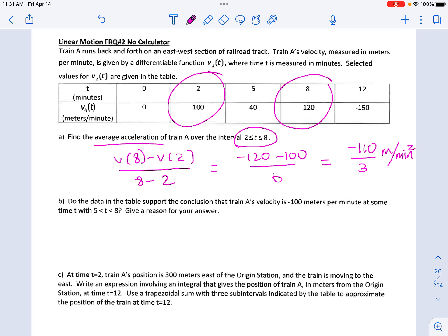Part B. Does the table support the conclusion that train A's velocity is? So is the velocity of train A a negative 100 at some point on this interval? So they're giving us a bunch of y values or velocities for train A. I want to know, can the y value or the velocity of train A ever hit negative 100?